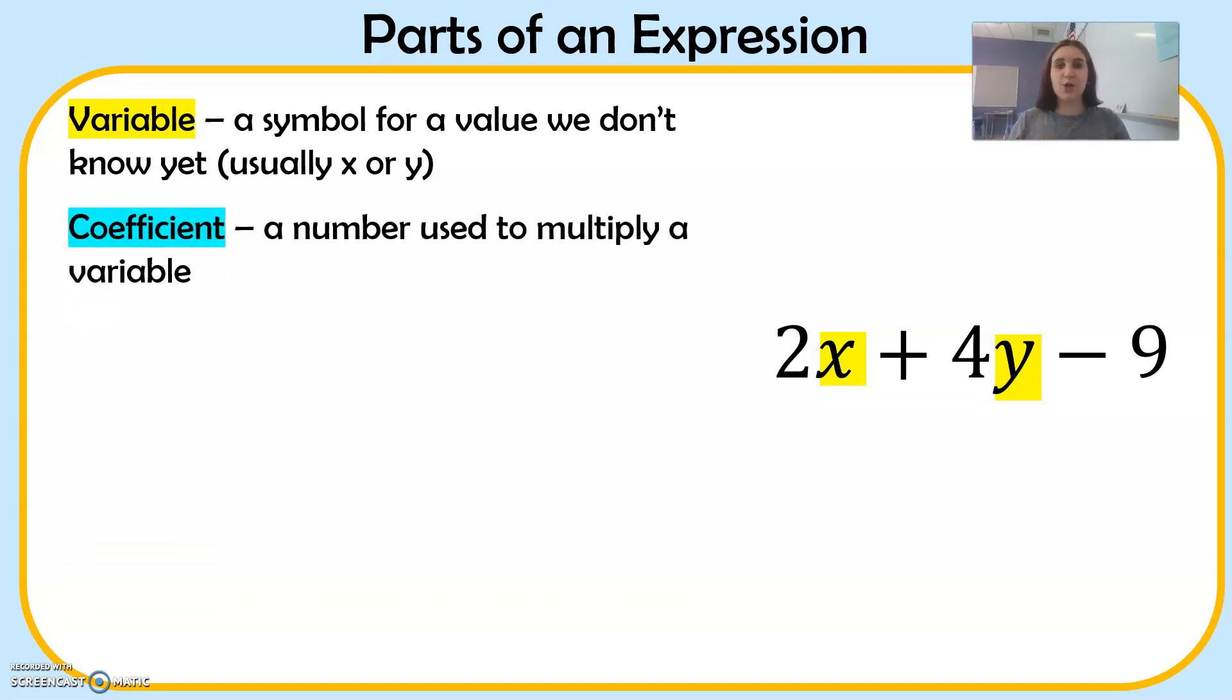Next we have the coefficient. The coefficient is a number used to multiply a variable. Coefficients are attached to variables. They're together. They're married. So in this example, 2 is the coefficient of x, and 4 is the coefficient of y.